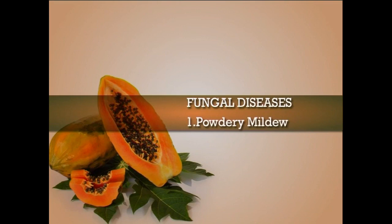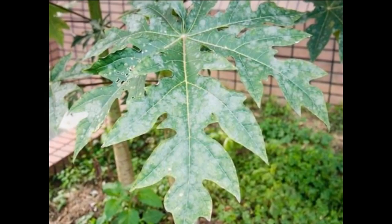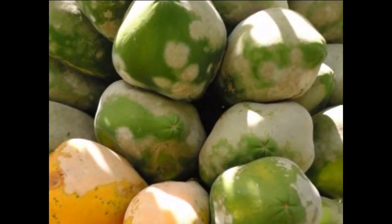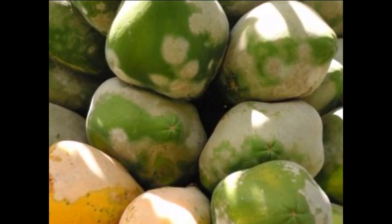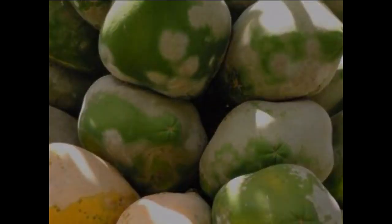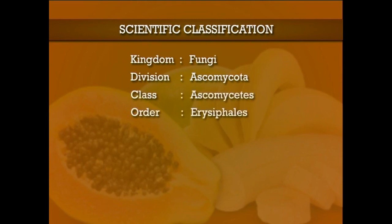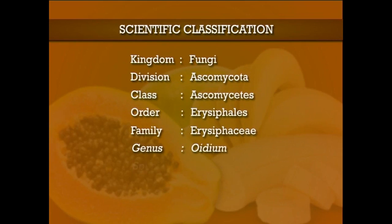The first one is powdery mildew. This pathogen appears as small, slightly darkened areas which later become white powdery spots. In more severe cases, die-back symptoms develop. Scientific classification: Kingdom Fungi, division Ascomycota, class Ascomycetes, order Erysiphales, family Erysiphaceae, genus Oidium, species caricae.